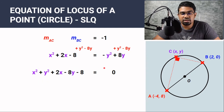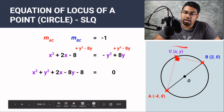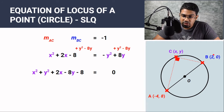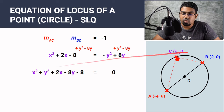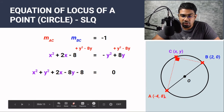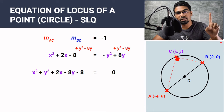This equation tells us the relationship between the x coordinate and the y coordinate along this circle. You can check your answer by using the points given to you. If you substitute x = 2 into this equation, you must get y = 0. Similarly, if you substitute x = −4 into this equation, you must get y = 8. This is the first method that we can use.